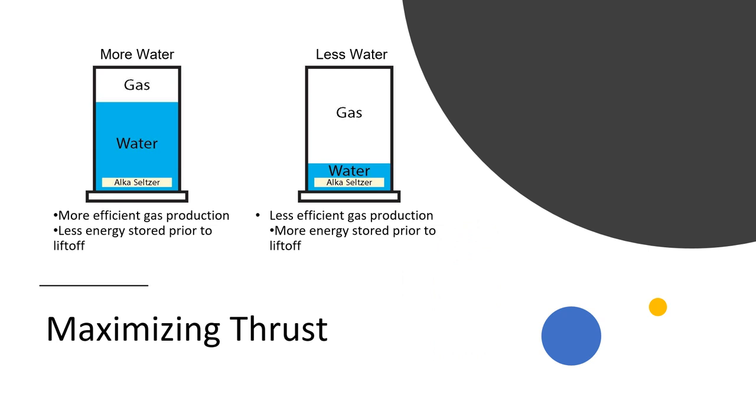My slide was on how to maximize thrust. In order to maximize the performance of our rocket, we had to understand how the amount of water in the rocket affected the system. Water in this system is a reaction mass, in other words a working mass, and that's essentially just shot down from the rocket to produce acceleration.